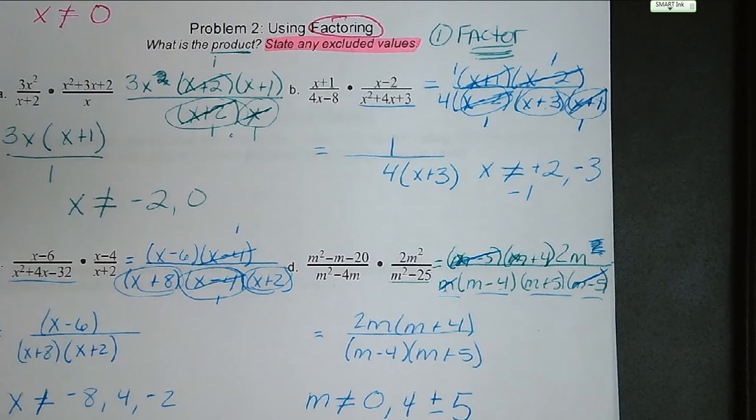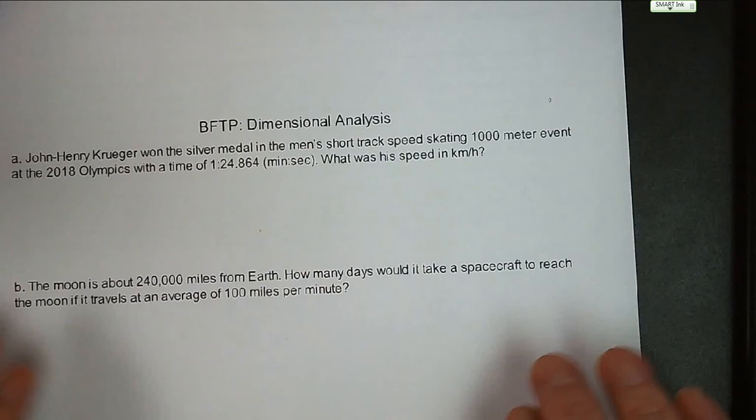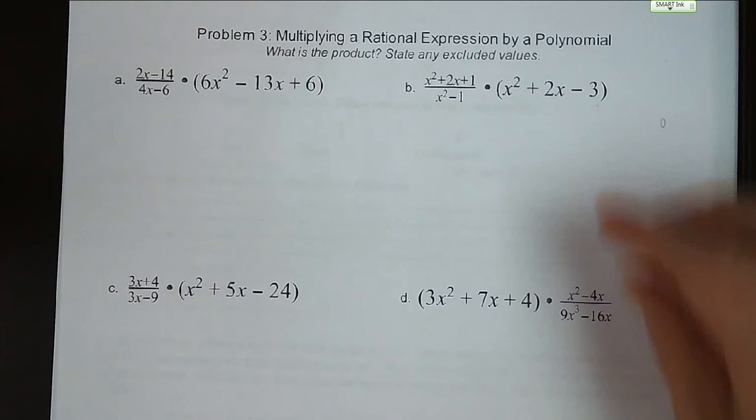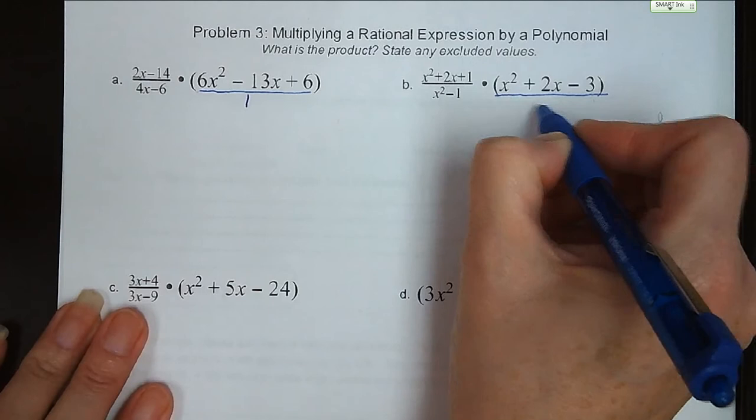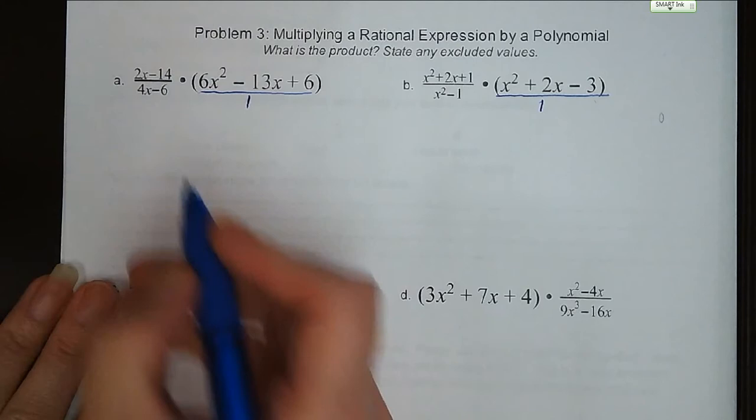Moving on to problem number 3: multiplying a rational expression by a polynomial. Again, we want to state what is the product and any excluded values. Just remember that the polynomial is just a fraction over 1, so this is really nothing new for us. We're going to need to factor.